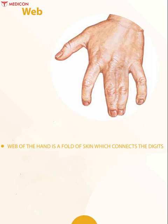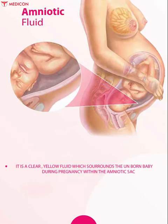Web of the hand is a fold of skin that connects the digits. These webs, located between each set of digits, are known as skin folds. Amniotic fluid is a clear yellow fluid found within the first two days following conception, within the amniotic sac. It surrounds the growing baby in the uterus and helps the developing baby to move in the womb, allowing for proper bone growth.